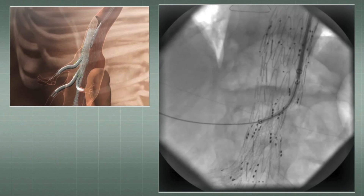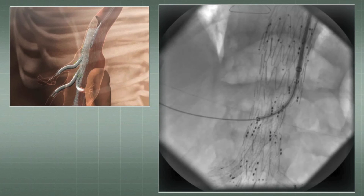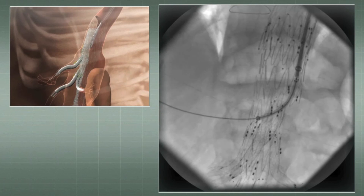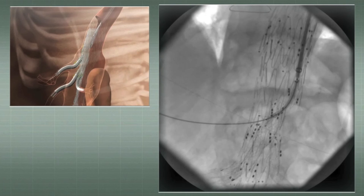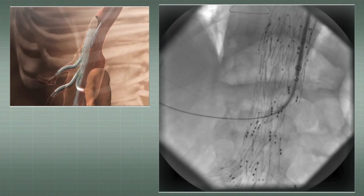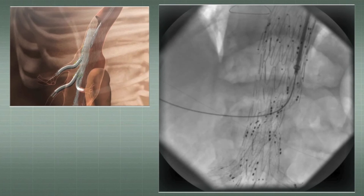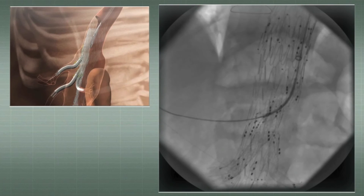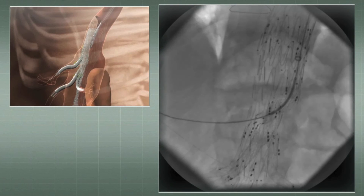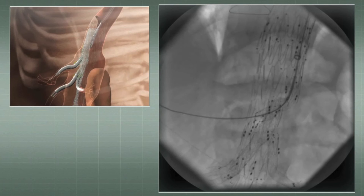Finally, the branch for the celiac trunk is catheterized with the sheath, followed by selective catheterization of the hepatic artery. Both stents are deployed and ballooned to seal, followed by a control arteriogram.